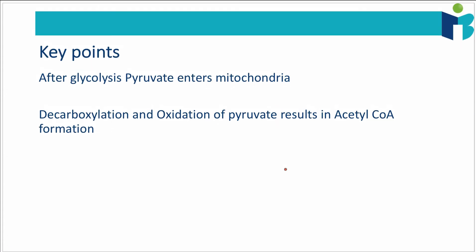The key points from this video: the link reaction occurs after glycolysis, which is why pyruvate enters the mitochondrial matrix. Decarboxylation and oxidation occur, converting pyruvate into acetyl-CoA. In the next video, we'll talk about what happens to this acetyl-CoA when it enters the Krebs cycle.